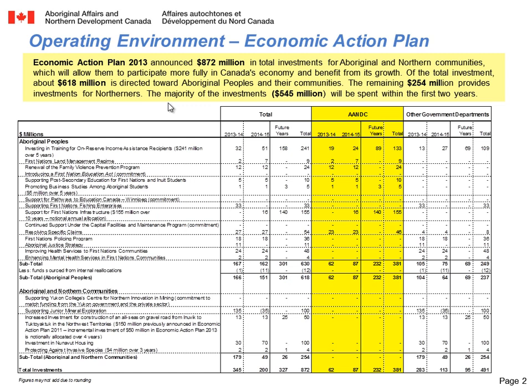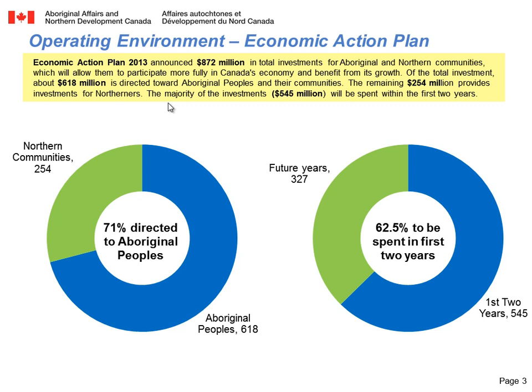This is a classic information overload situation. When we start every discussion, we ask: what's the message that you're trying to communicate? In this case they're trying to communicate two related messages: one is how much of the money is going to be spent on one group as opposed to another group, and how much money is going to be spent in the first two years as opposed to future years. One of the great visuals you can use for this is a donut graph.